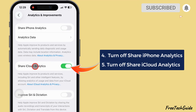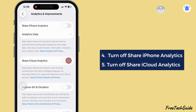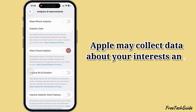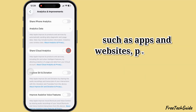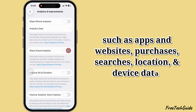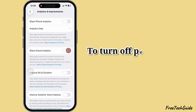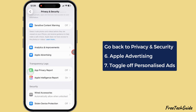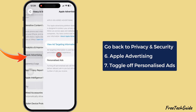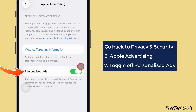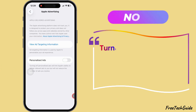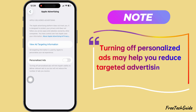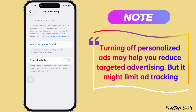Also, turn off the toggle next to Share iCloud Analytics. If you have enabled personalized ads, Apple may collect data about your interests and usage patterns, such as apps and websites, purchases, searches, location, and device data. To turn off personalized ads, on the same settings page, go back to Privacy and Security, select Apple Advertising, and turn off the toggle next to Personalized Ads. Note: turning off personalized ads may help reduce targeted advertising, but it might limit ad tracking.